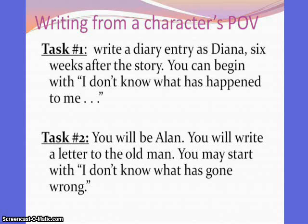As Diana, you would be writing a diary entry that takes place six weeks after the story has ended. You're going to be writing in your diary everything that's happening in Diana's life — what she's feeling, what she's thinking, how her life has changed. One possible way you could begin this diary is with a sentence like: 'I don't know what has happened to me. I am so in love with this guy, Alan, who before I never gave the time of day to.'